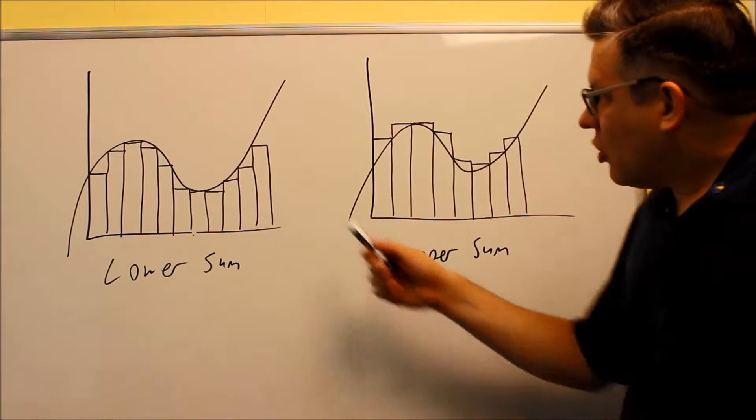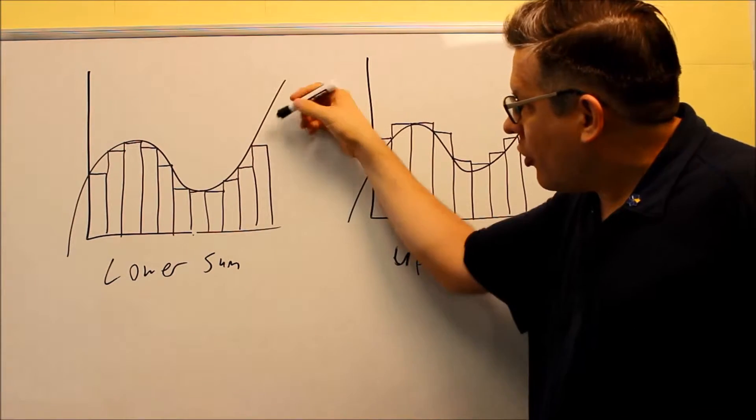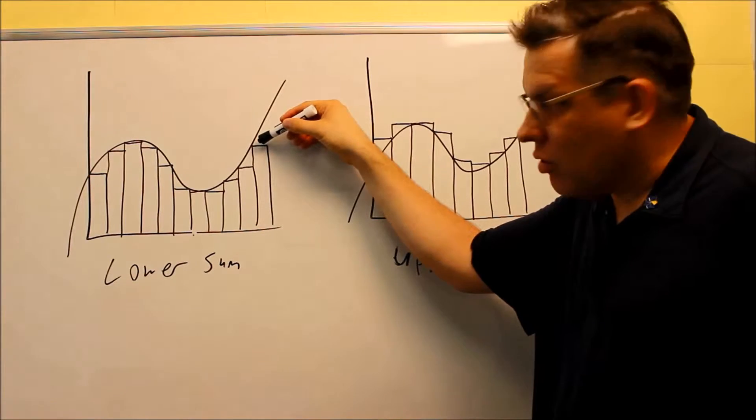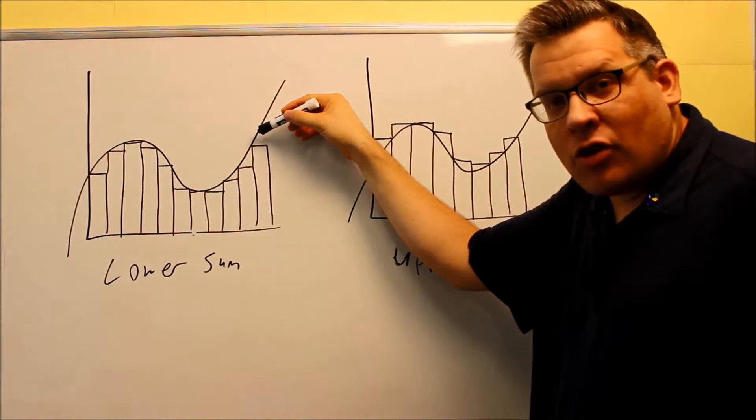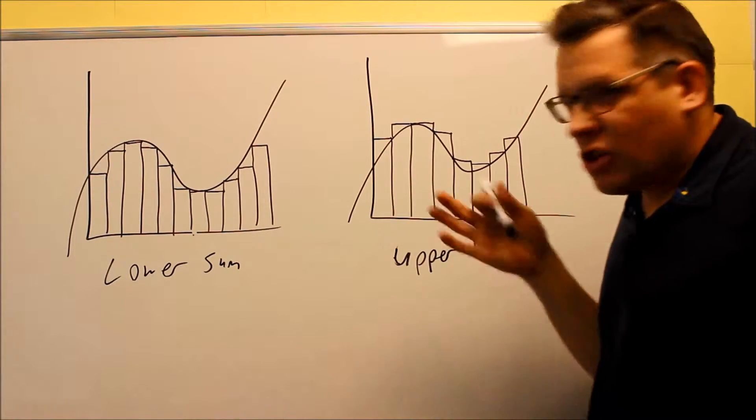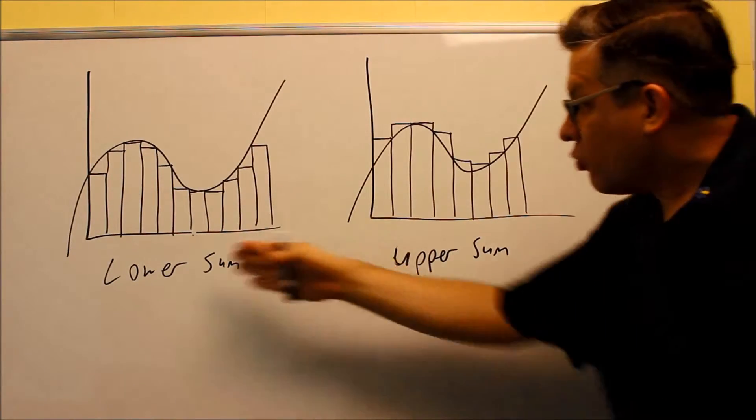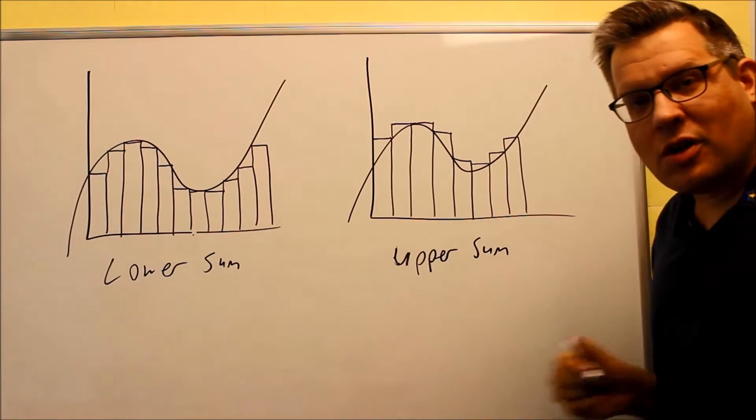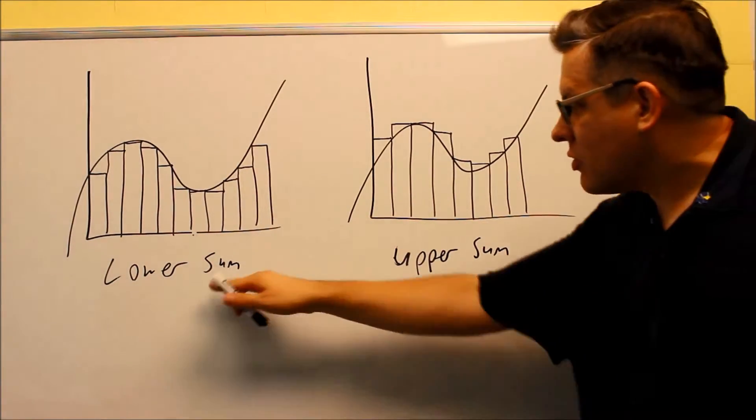Now the midpoint, what it does is the halfway point or the midpoint of the rectangle ends up appearing on our function itself. So that's a little bit better estimate because it'll be right in between these two. But in this section, we're only going to be focusing on just these two, upper sum and lower sum.